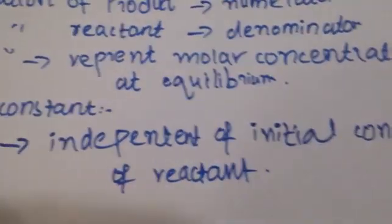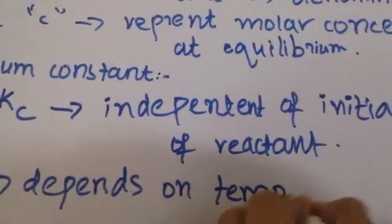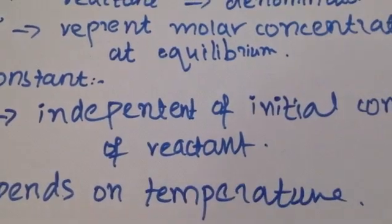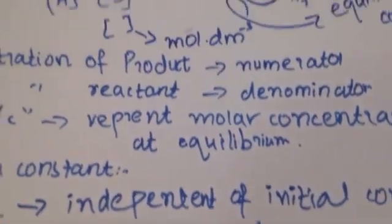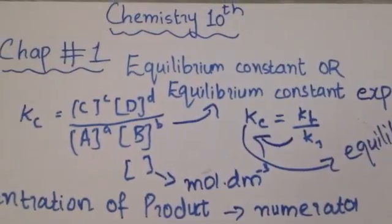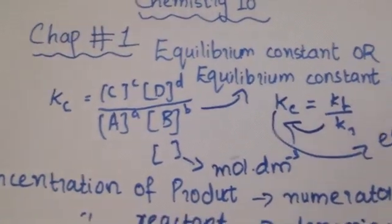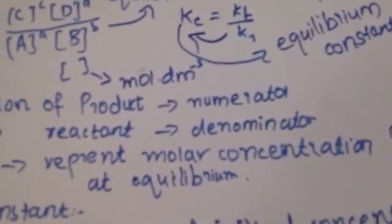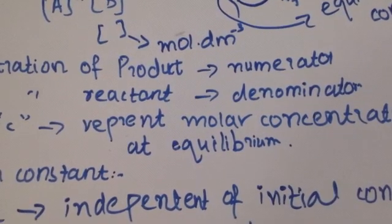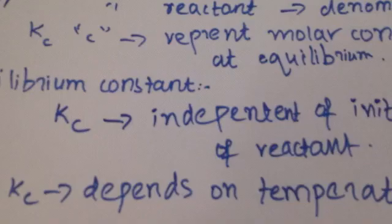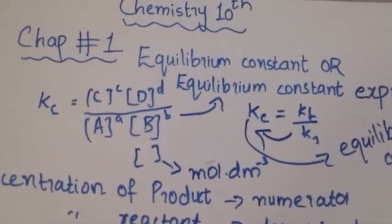Kc depends on temperature — temperature plays a main role in the equilibrium constant. It does not depend on the starting concentration of reactants, but it does depend on temperature. The concentration of reactants is always in the denominator and the concentration of products is always in the numerator.